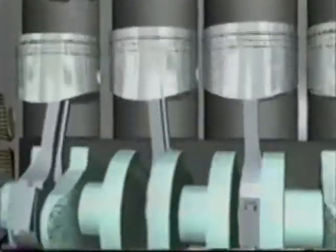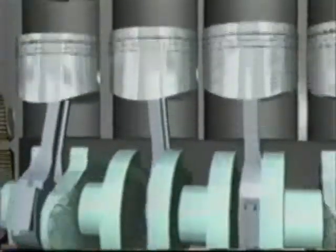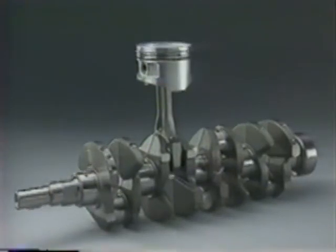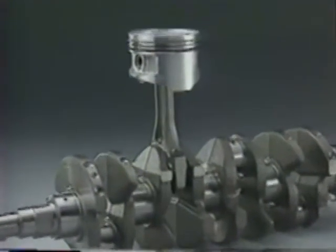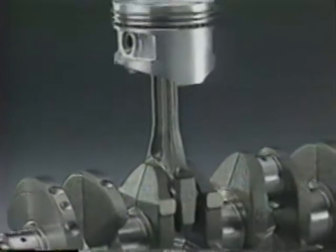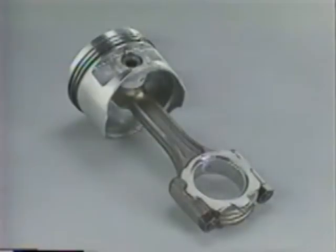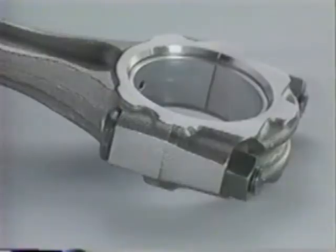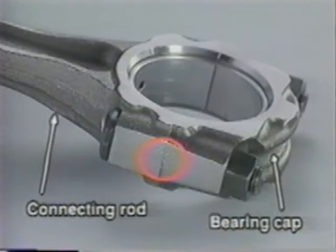The connecting rod links each piston to the crankshaft so that the piston's vertical motion is converted to rotary motion. Since the connecting rod is subject to continuous compressive force, tensile force, etc., it must be rigid enough to endure these loads. In assembly, make sure to select a bearing cap suitable to the connecting rod.